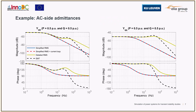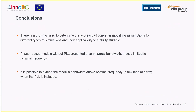The least accurate models are those that do not include the PLL dynamics — the simplified RMS models. These are only valid for frequencies very close to the nominal frequency of 50 Hz, as they start to diverge at very low frequency offsets. As a conclusion, there is a growing need to determine the accuracy of converter modeling assumptions for different simulation types. Phasor-based models without PLL presented a very narrow bandwidth, mostly limited to nominal frequency, but including the PLL extended this bandwidth above nominal frequency up to a few tens of Hertz.